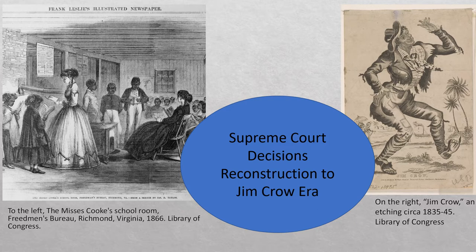The era of Reconstruction to the rise of Jim Crow provides an example of the three branches of government in action. After the Civil War, the United States government sought to integrate a free South into the United States. Although the war had not begun as a war to abolish slavery, it had transformed into just that by the end.